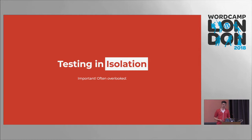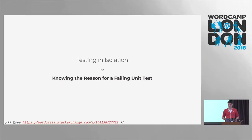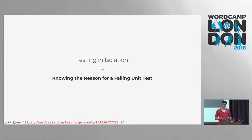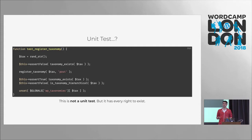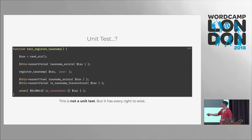The third thing: testing in isolation. This is really important, but for some reason it is very often overlooked. Testing in isolation also means that you know the reason if a test fails. Just your gut feeling — is this a unit test? This is taken from the WordPress core tests. It's not a unit test, at least from what we can think of when reading this. We have this function we want to test, but we also call other functions. So this is not a unit test — it's some kind of integration or system test. But it has every right to exist; it just should also be accompanied with unit tests.